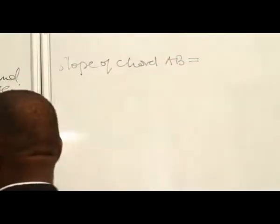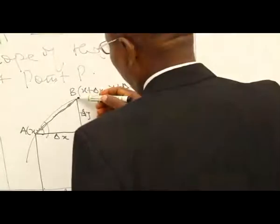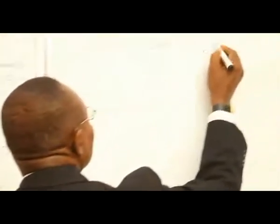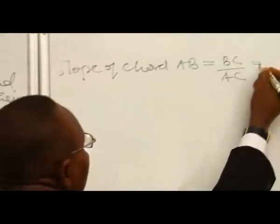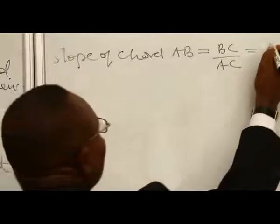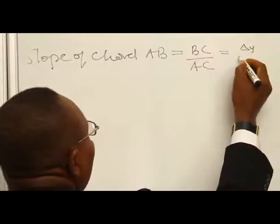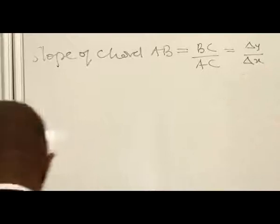The slope of chord AB is BC over AC, and this value is equal to the change in Y over the change in S.